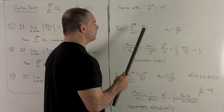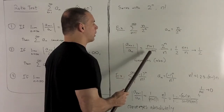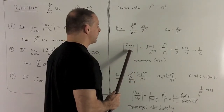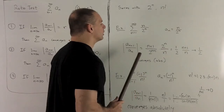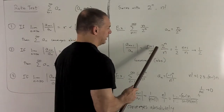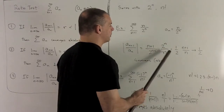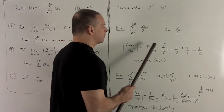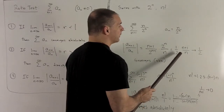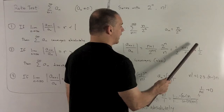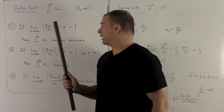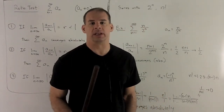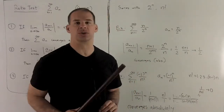So a sub n+1 is n+1 over 2 to the n+1, put over a sub n, which is n over 2 to the n — so we just flip that over. The 2 to the n+1 over 2 to the n reduces to a half since the n's in the exponent subtract out, leaving 2 to the 1 in the bottom. Then we have n+1 over n, and taking the limit as n goes to infinity, that part tends to 1, leaving us with one half. Our limit equals a number strictly less than 1, so we have convergence.